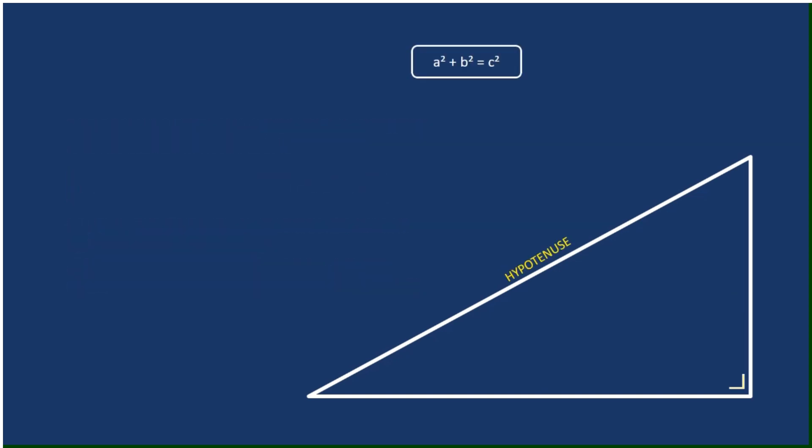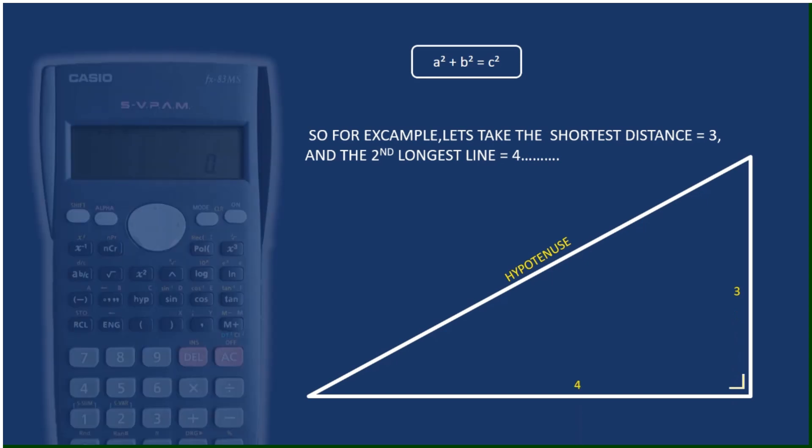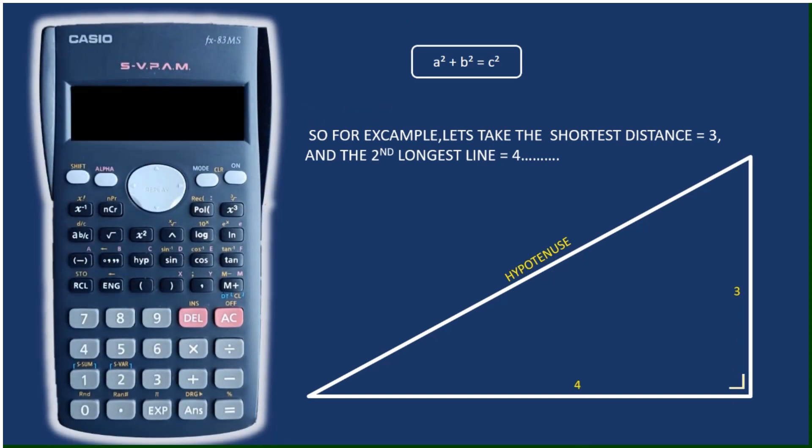So here we're going to apply this formula now to an example. In this case the shortest side on that right angle triangle will be 3 and the next longest side will be 4.